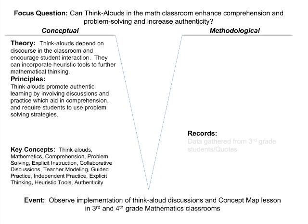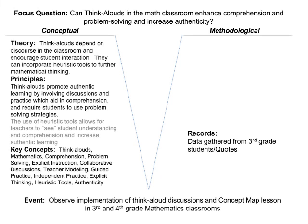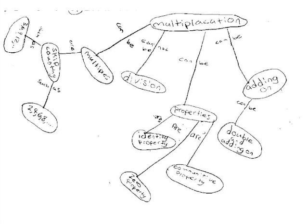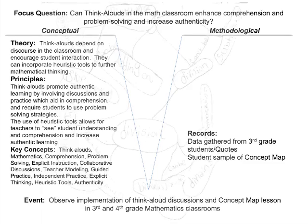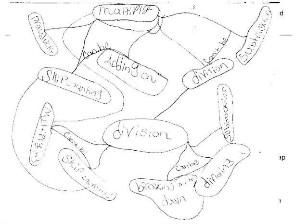This is seen in the data gathered from third grade students and in quotes from the research. The use of heuristic tools allows teachers to see student understanding and comprehension and increase authentic learning. For example, one student's concept map begins with multiplication at the top and stems down, saying multiplication can be increasing, adding on, doubling, and cannot be division. Whereas another student's sample had separated concepts into multiple maps — you could really see that student didn't understand how all the concepts in multiplication fit together. This tool is used for teachers to assess students and for students to further their thinking on whatever concept is being taught.